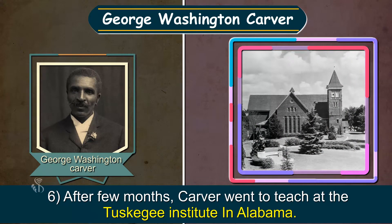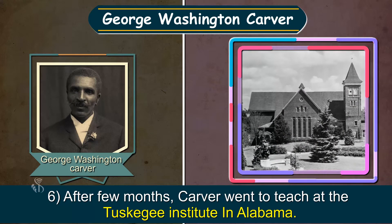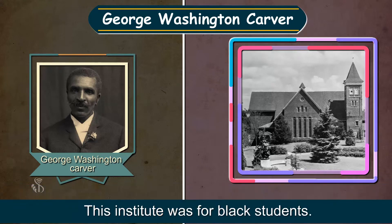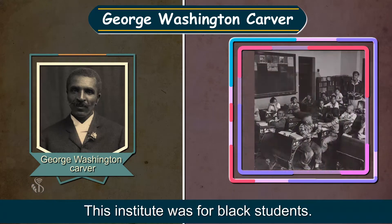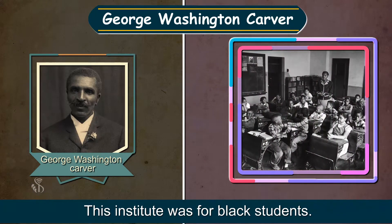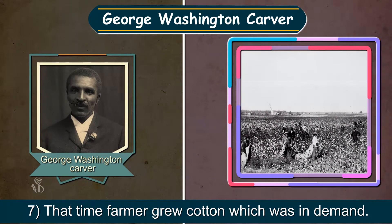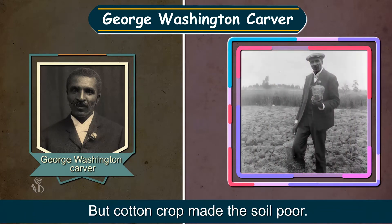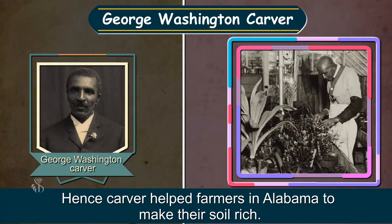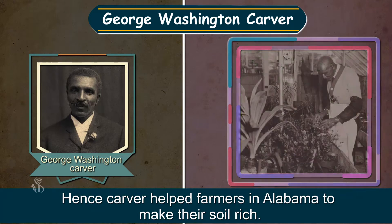He went from place to place to find a college where he could study. Six: after a few months, Carver went to teach at the Tuskegee Institute in Alabama — this institute was for Black students. Seven: at that time, farmers grew cotton which was in demand, but cotton crop made the soil poor, hence Carver helped farmers in Alabama to make their soil rich.